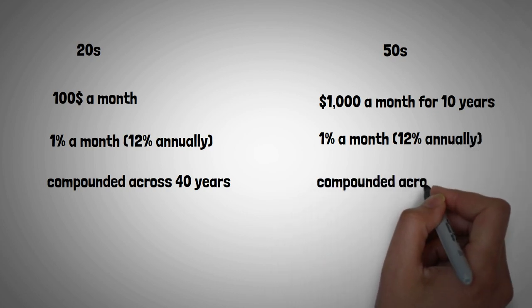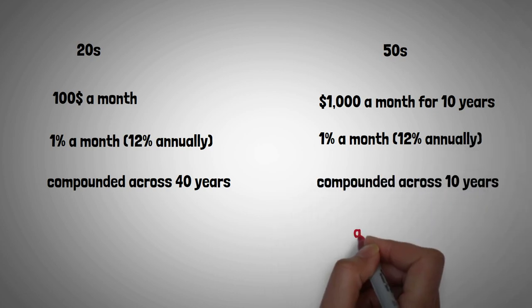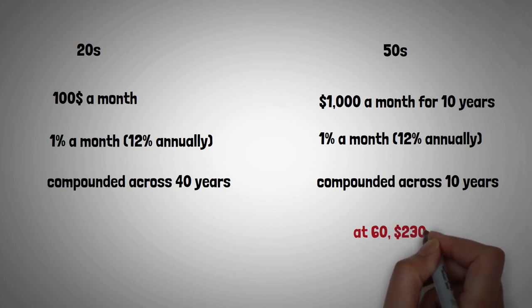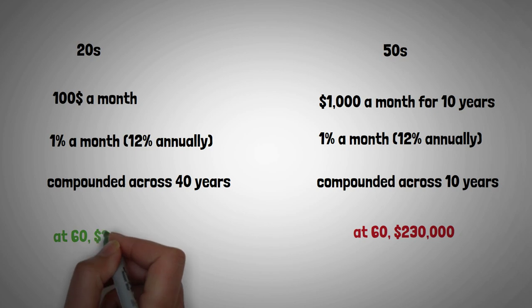When you hit your 40-year savings mark, and your twin has saved for 10 years, your twin will have generated about $230,000 in savings, while you will have a bit more than $1.17 million.